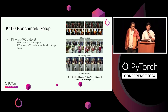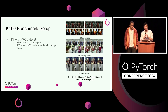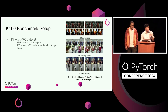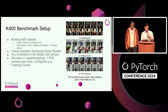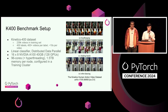The example dataset we'll use is Kinetics 400, an open source dataset with about 240,000 training videos. It's relatively small, and the video lengths are usually around 10 seconds. We're training a very simple linear classifier using distributed data parallel on 16 hosts, each having eight NVIDIA A100 GPUs — 128 GPUs total. Each host has 96 cores shared among those eight GPUs and 1.5 terabytes of memory, all configured in a training cluster with high-speed interconnects.